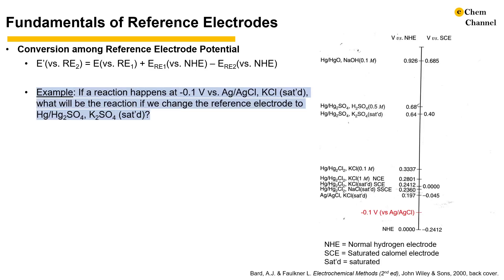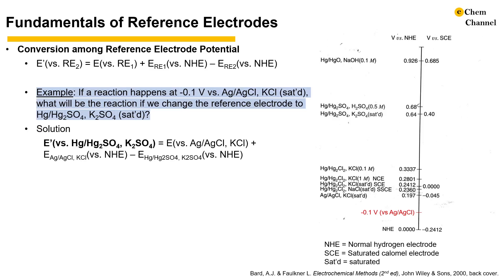It is easier to understand the conversion with an example. Let's convert −0.1 V versus silver/silver chloride in saturated potassium chloride to the potential versus mercury/mercury sulfate in saturated potassium sulfate. We can apply the equation above and plug in the numbers. Silver/silver chloride in saturated KCl is 0.197 V versus NHE, and mercury/mercury sulfate in saturated potassium sulfate is 0.64 V versus NHE. The resulting potential is −0.543 V.